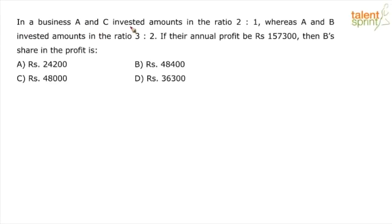In a business, A and C invested amounts in the ratio of 2 is to 1. So A is to C is equal to 2 is to 1. Whereas A and B invested amounts in the ratio of 3 is to 2. A is to B is equal to 3 is to 2.